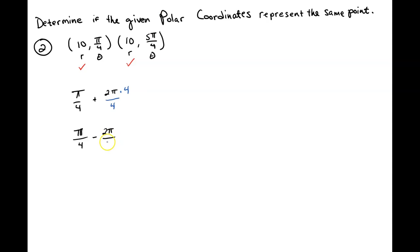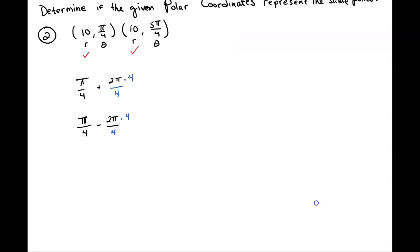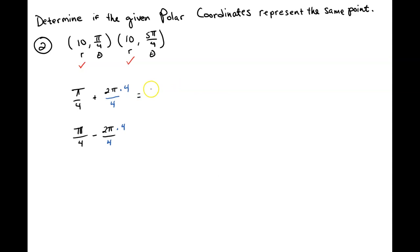So we're going to have 4/4. Excuse me there. All right, so let's see what this looks like. This is π/4 + 8π/4, and this would give us 9π/4, and then the other one would be π/4 - 8π/4, which is going to be a negative 7π/4.